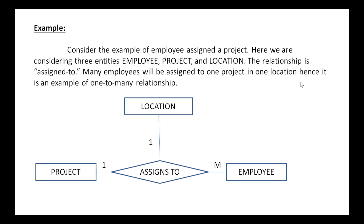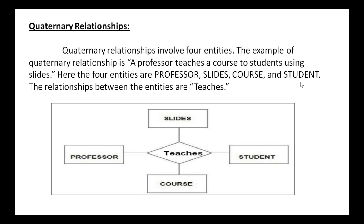These types of relationships are called ternary relationships. The last one is quaternary relationship, which involves four or more entities. For example, the 'teaches' relationship associates four entities: professors, slides, course, and students. A professor teaches a course using slides to the student. So four entities are associated in that particular relationship. If there are four or more entities involved, that type of relationship is called a quaternary relationship.